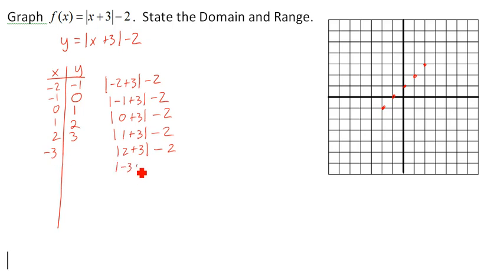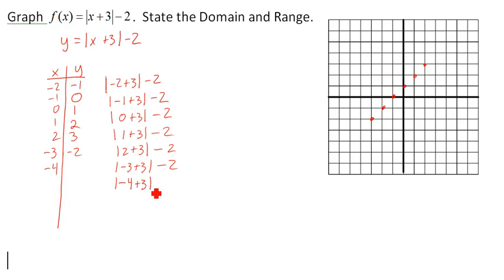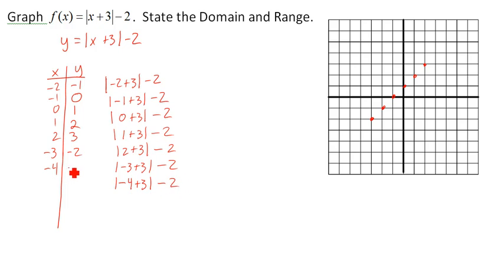So I'm going to put in negative 3: the absolute value of negative 3 plus 3 minus 2. Negative 3 plus 3 is 0, minus 2 is negative 2. So let's put in negative 4 because I want to figure out what that left-hand side looks like. Negative 4 plus 3 is negative 1; take the absolute value of negative 1 and you get positive 1, minus 2 is negative 1. So negative 4, negative 1.